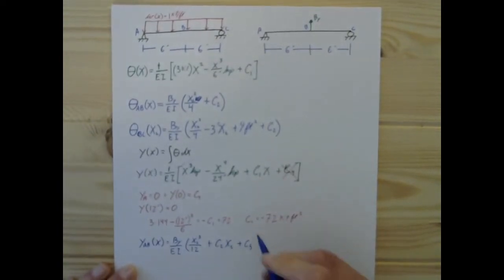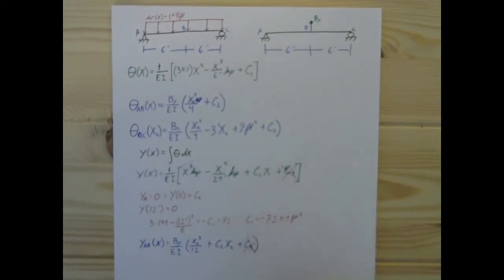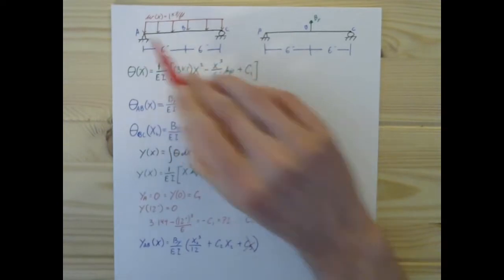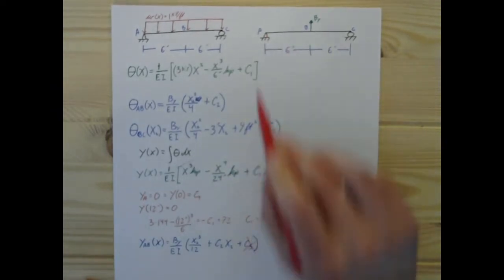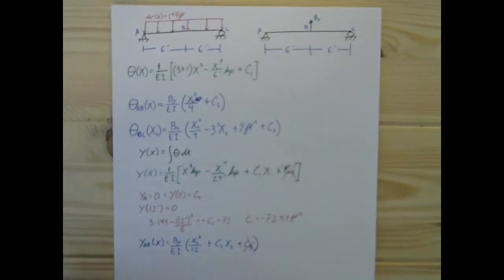And this, similarly to C4, we can immediately dismiss. We can dismiss this as 0 because there's a pin right there, it's the same geometric beam, there's just different loadings. So, there's a pin there, C5 has to be 0. We're golden.